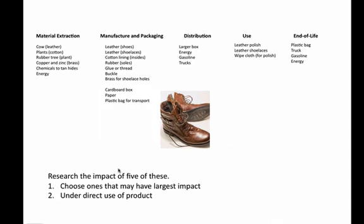For number two on the homework assignment, you want to look at the research impact of five of these items. You want to pick some that are direct use of your product — these are the best ones to start with. Leather would probably be good, rubber soles, maybe the buckle or shoelace holes. This is the whole point of going from your inventory to how to sustainably design a better product. You don't want to use something that's not within your control — you're most likely controlling the manufacturing and packaging, so focus on researching items within your sphere of influence.